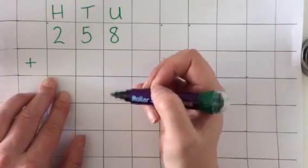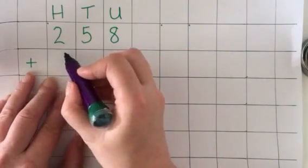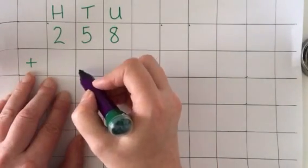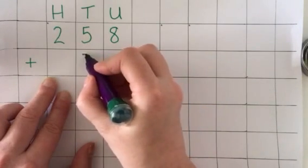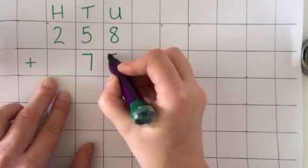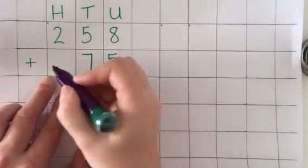If I was to incorrectly position the 75, that would cause me to get the calculation wrong. So 75 goes here with five in the units column and seven tens.